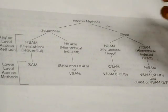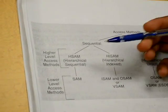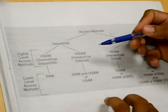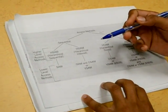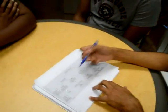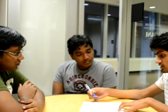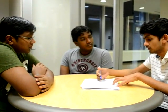Coming to the sequential access method, there are again two types: the hierarchical and the hierarchical index. These are generally the higher-level access methods which use, in turn, the lower-level access methods, like the sequential access method and the integrated and overflow sequential access methods. These generally use the functions of the lower-level access methods. And coming to the direct access methods, these are again the hierarchical direct access method and the hierarchical index direct access method, and it also contains the overflow, which can be derived using the overflow sequential access method.